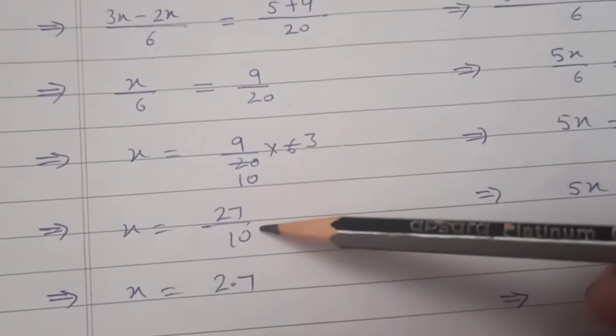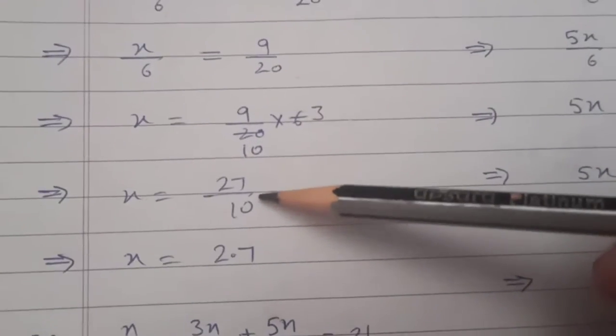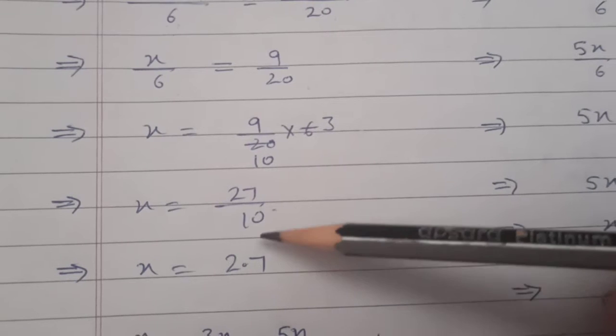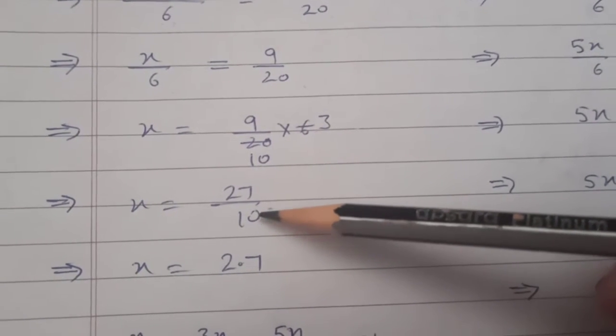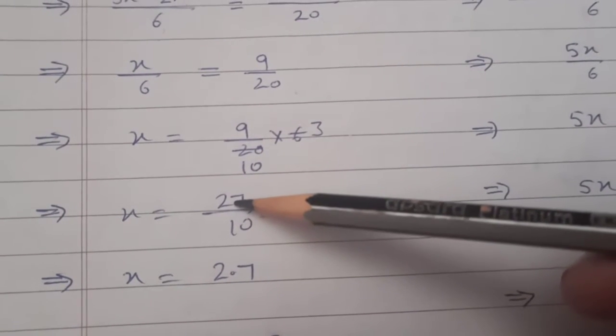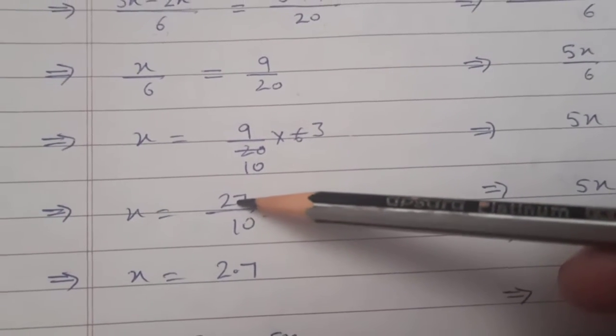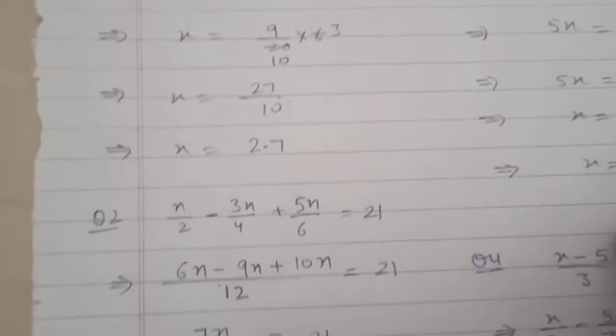And x is equal to 27 upon 10. We also convert this into decimal. Since the denominator is 10, we place the decimal one place before the last digit, giving x = 2.7.